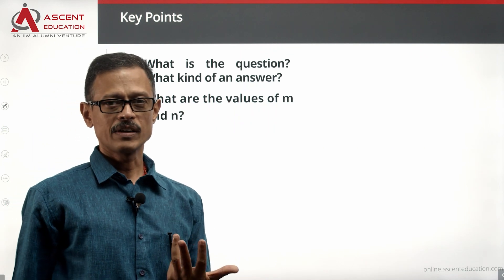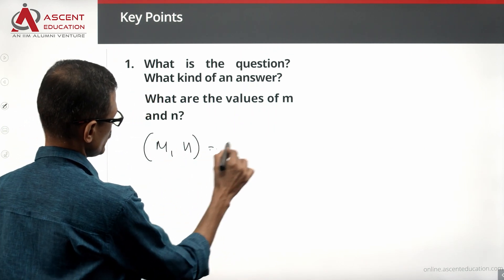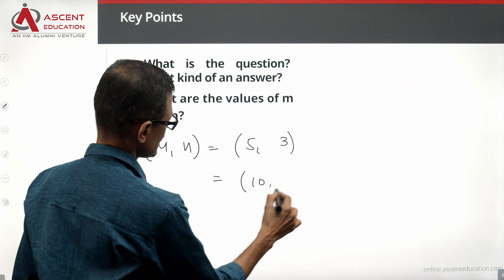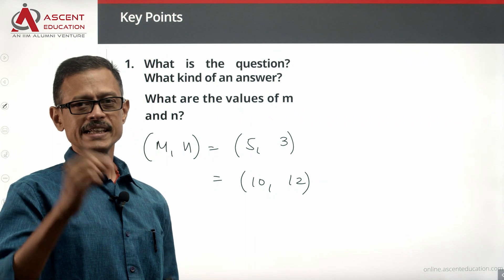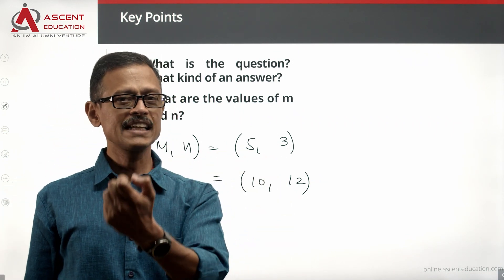What is the question? What are the values of M and N? The answer could be M, N equals 5, 3 or it could equal 10, 12. It is a unique set of values we need to give for the value of M and N.